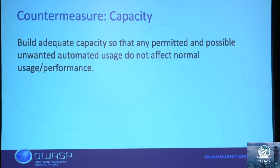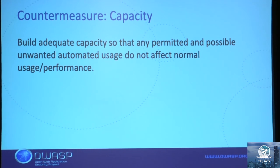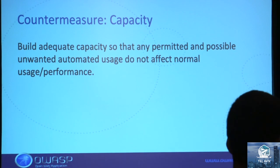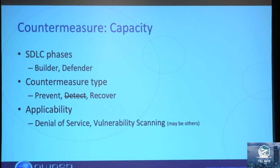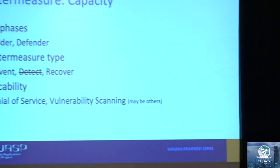Capacity is another countermeasure — having elastic infrastructure to scale up and down, or using a content delivery network to disperse the load. It could also mean having an unlimited supply of goods. We don't judge which method is more effective — we discover these methods and put them into categories. Capacity can be applied as part of the software or outside it. It will help prevent and help you recover once you have more capacity. It's particularly useful if you're subject to denial of service attacks or vulnerability scanning — just having more capacity means you don't have to deal with the full consequences of these threats.